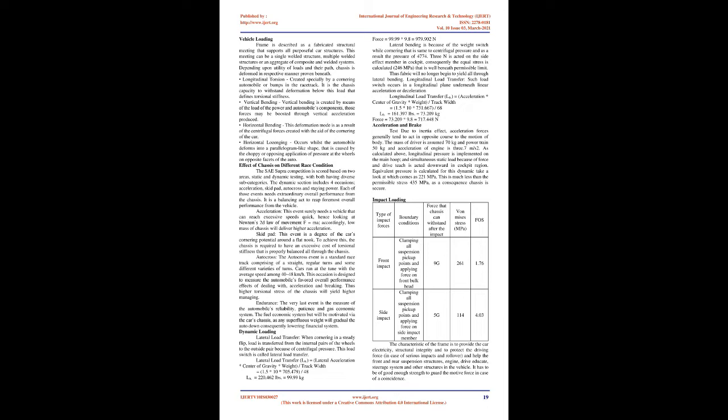The skid pad event measures the car's cornering potential around a flat course; the chassis is required to have a high value of torsional stiffness that is well balanced throughout. The autocross event is a standard race track comprising straights, regular turns, and various other turns, with cars running at an average speed of 40–48 km/h, measuring handling, acceleration, and braking. The endurance event measures the automobile's reliability, patience, and fuel economy, with any superfluous chassis weight reducing fuel economy.